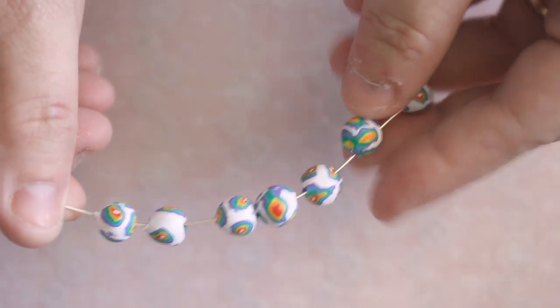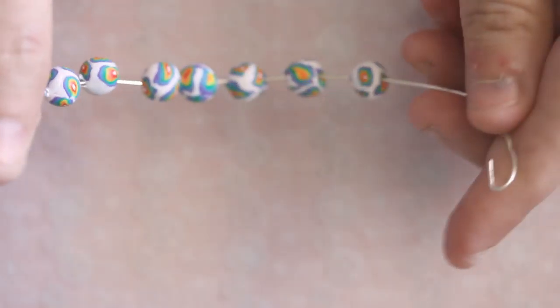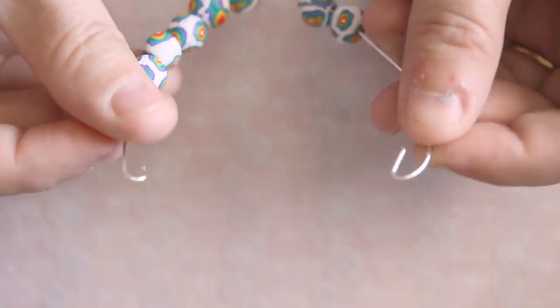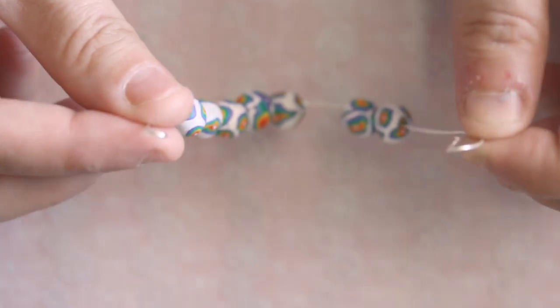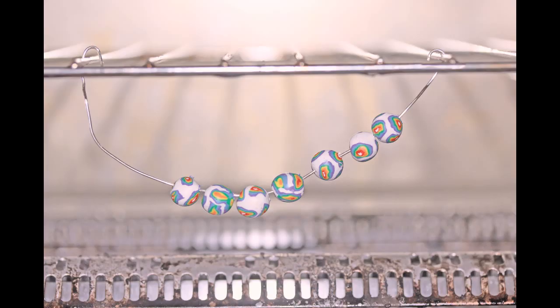After you've put them all on the wire like this, you're going to bend the ends of each side with some round nose pliers or with your fingers, and then attach it to the wires in the oven that you're baking in so they hang down like that and they'll bake like that.